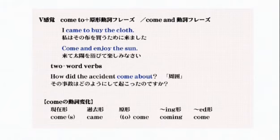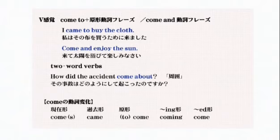「come to」プラス原型動詞フレーズで何々するために来るということです。もちろんandを使うこともできます、いわゆるto不定詞の副詞的用法と言われるものですね。「go to buy the clothes」布を買うために行く、「go and enjoy the sun」太陽を楽しむために行くというふうな表現です。